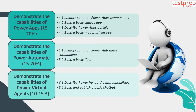Topic 4: Demonstrate the capabilities of Power Apps, which comprises 15 to 20 percent weightage in the exam. This includes: 1. Identify common Power Apps components; 2. Build a basic Canvas app; 3. Describe Power Apps portals; 4. Build a basic model-driven app.